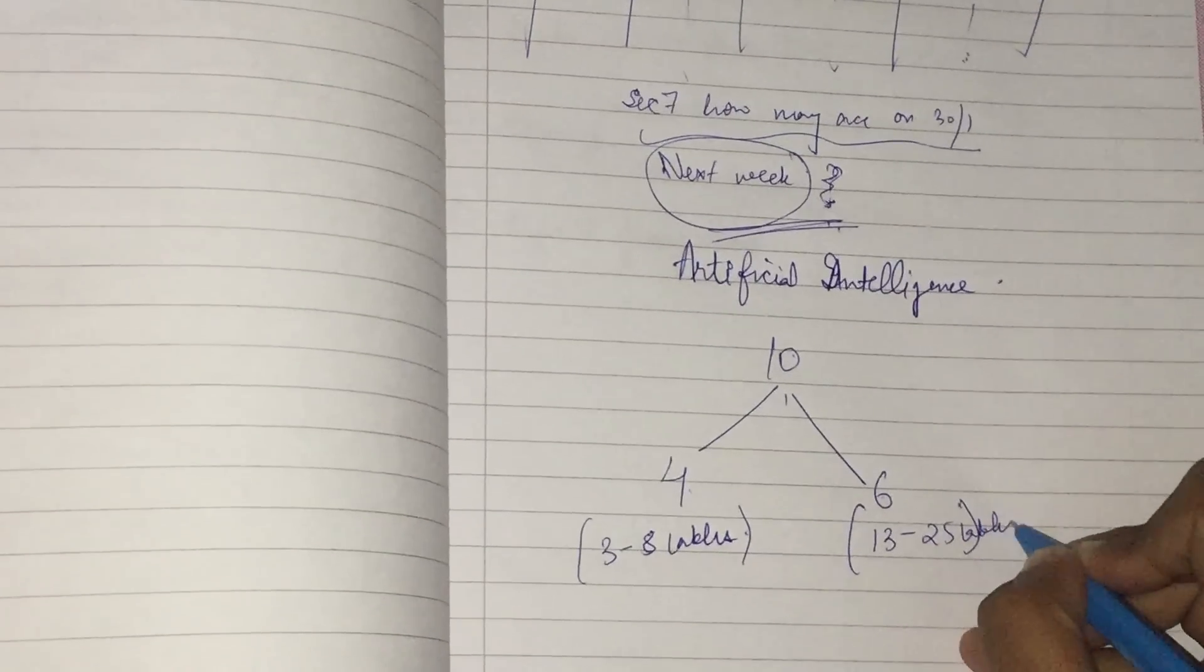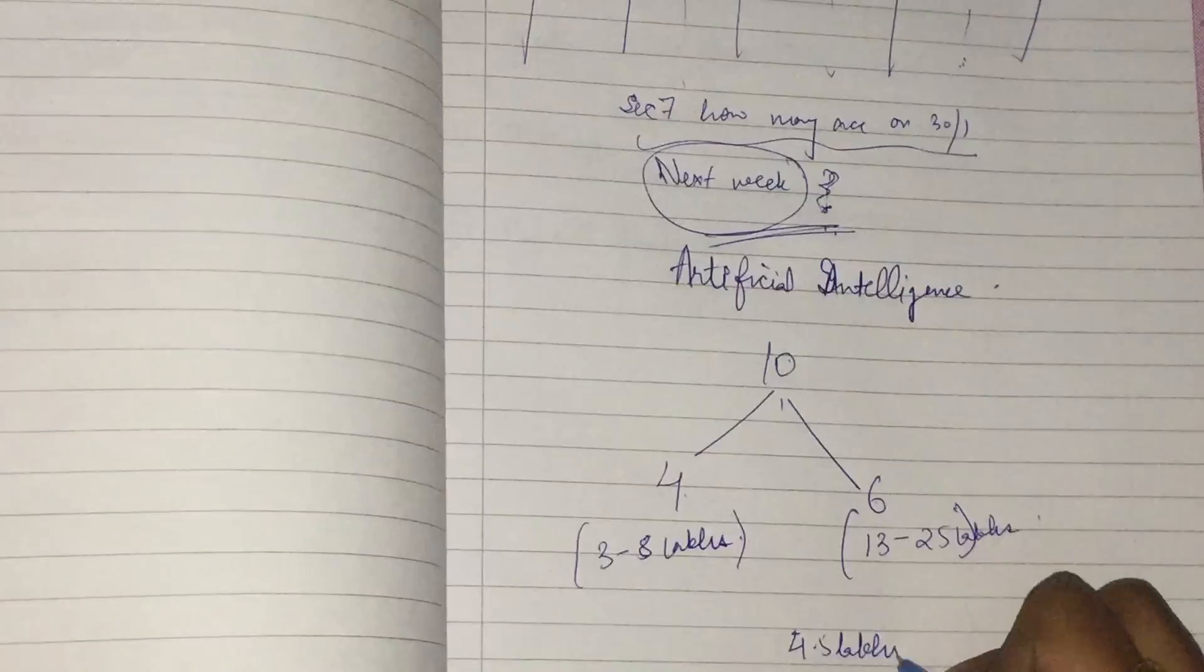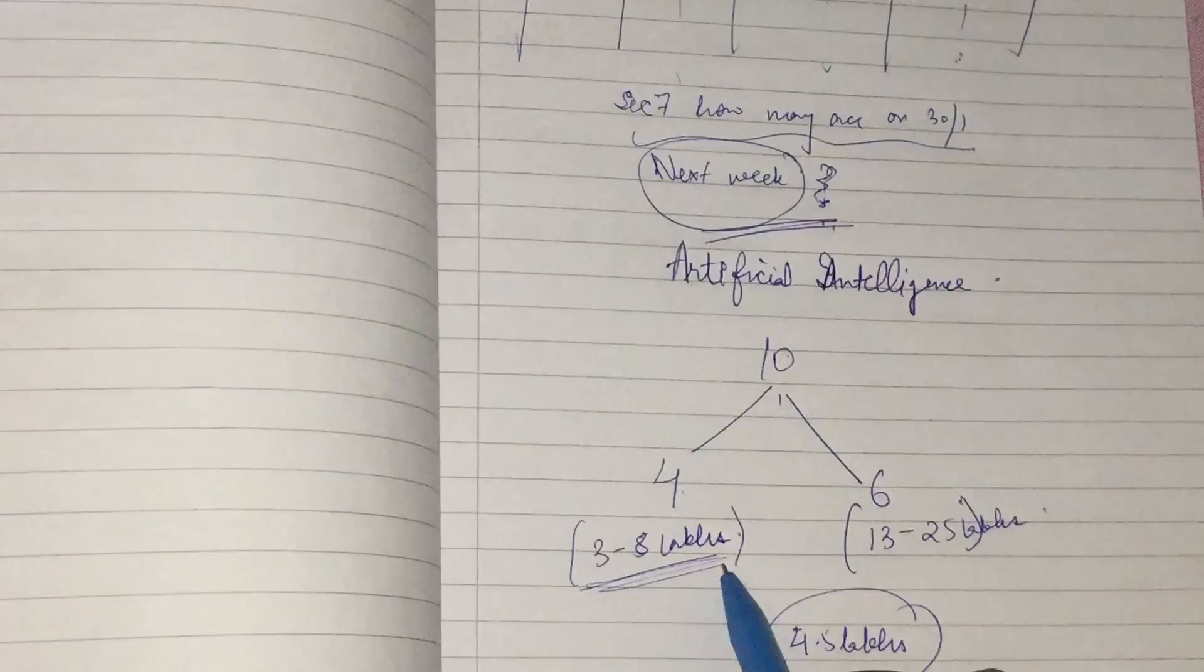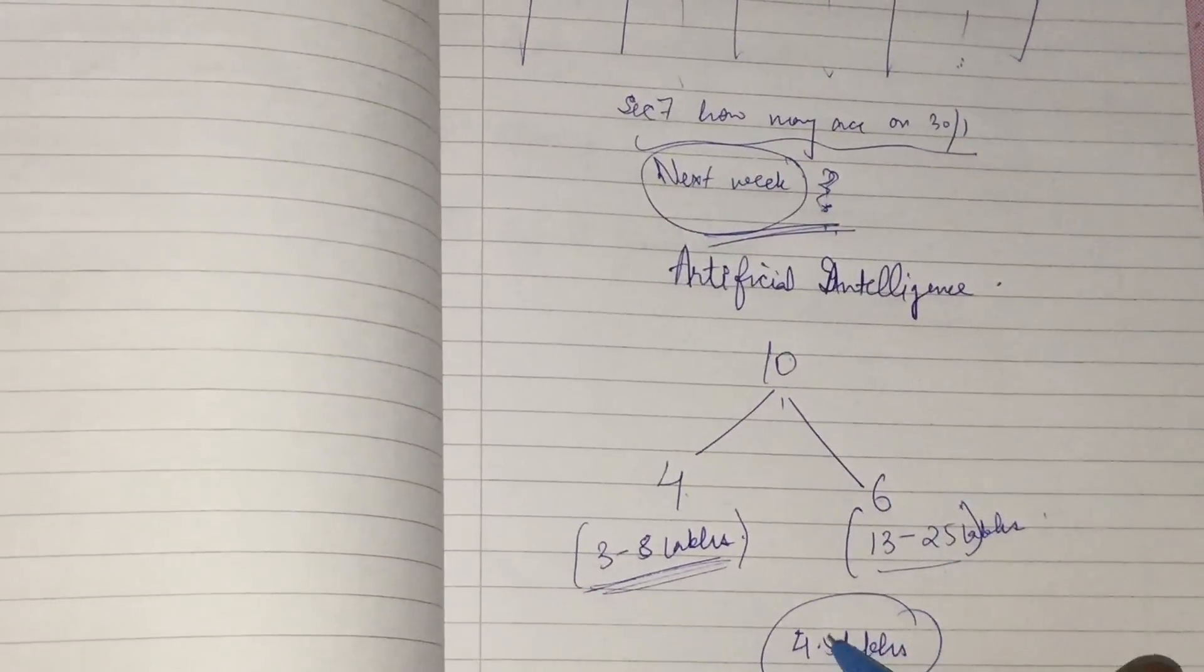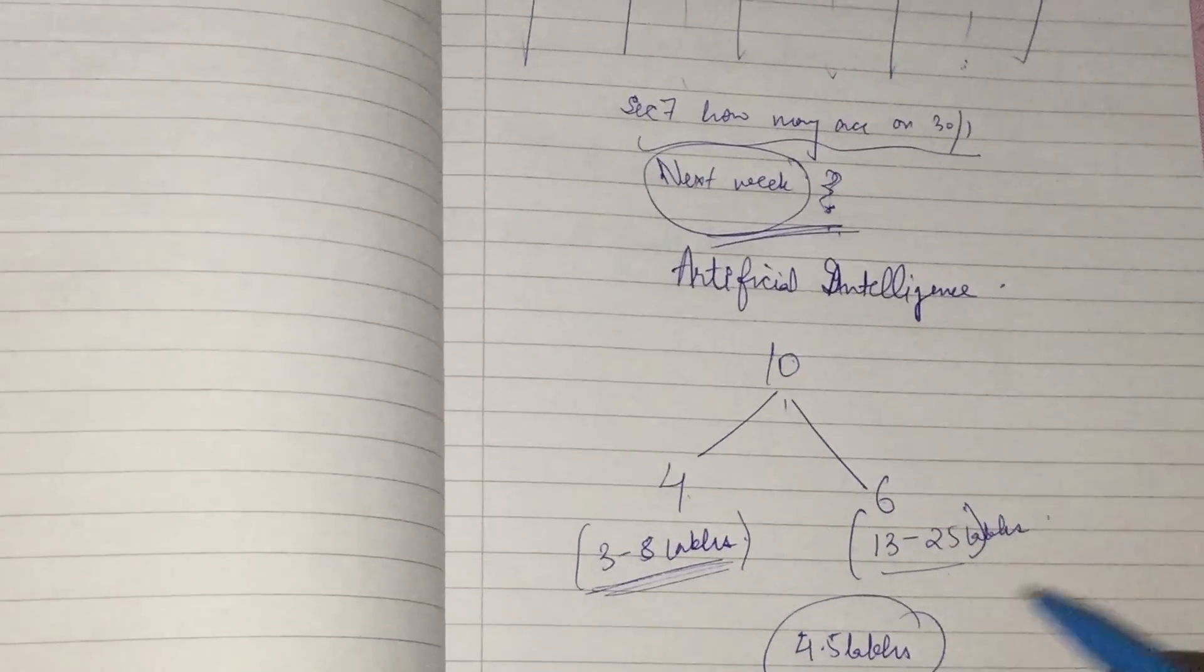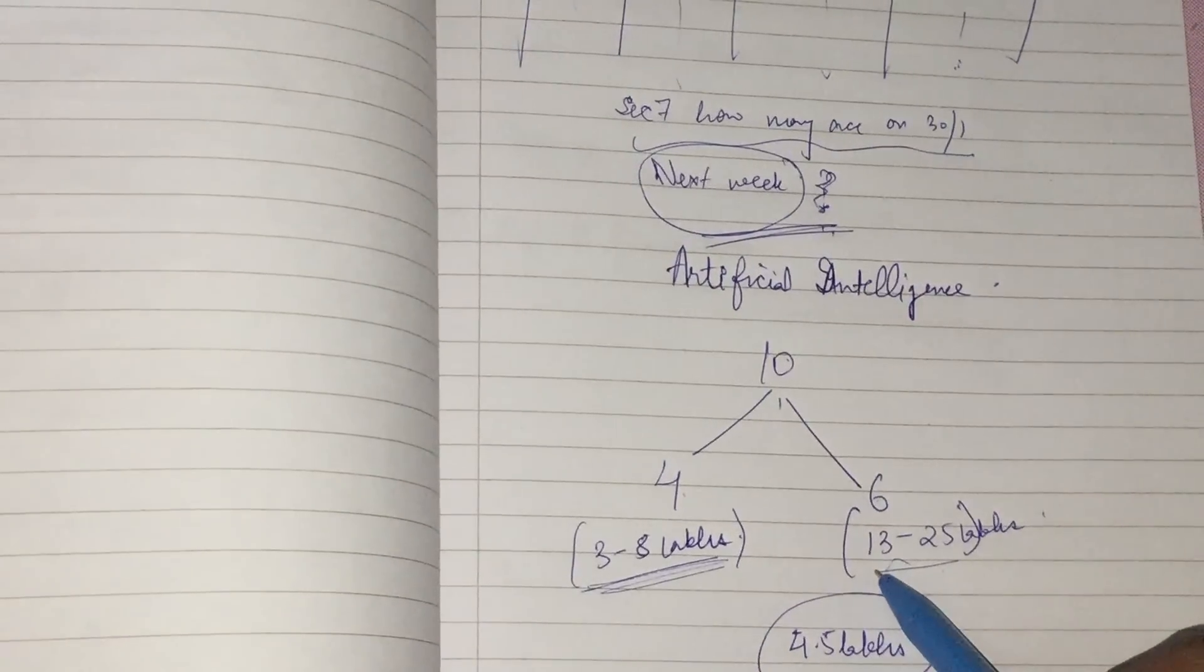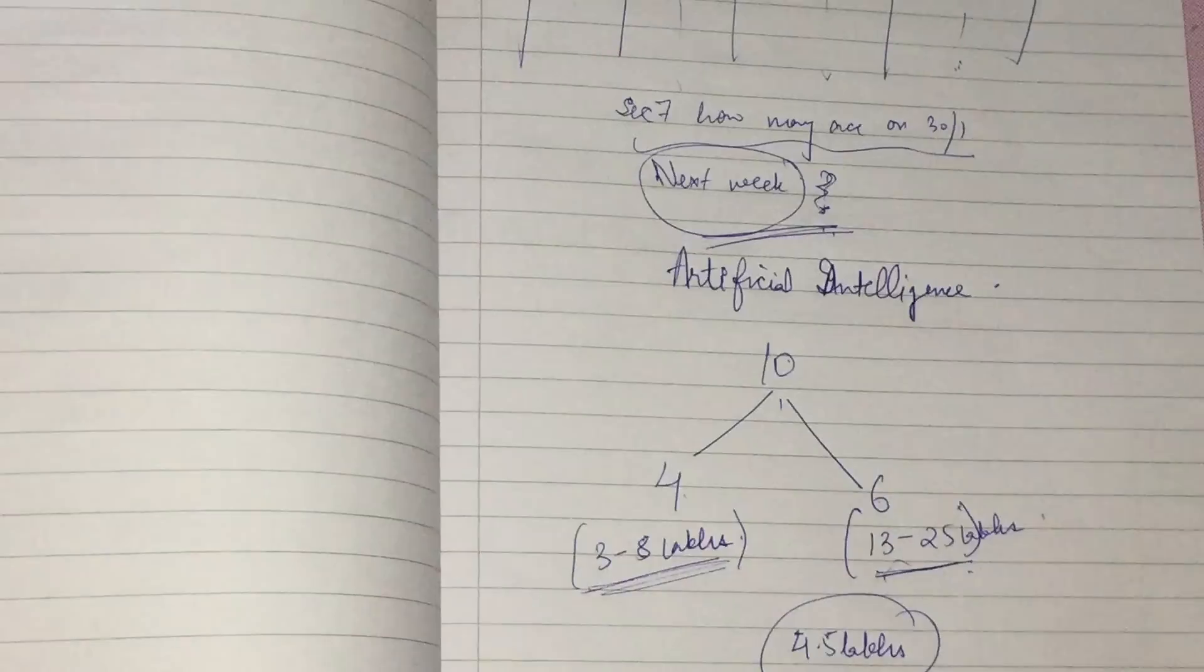So now I launch a new car whose price is four point five lakhs. Now what do you think, which customers will buy this car? Obviously the ones who have bought the car with the range of this. Because somebody with already luxury cars, why would he want to buy a car of a lesser amount? Unless otherwise necessary, if we take a general scenario, it is obvious that the person who can afford to buy a car of bigger price, why would he take this price?